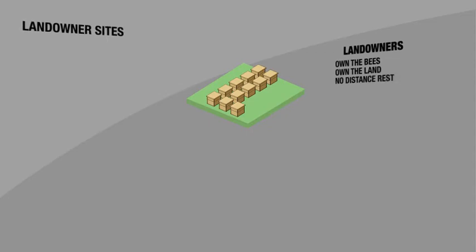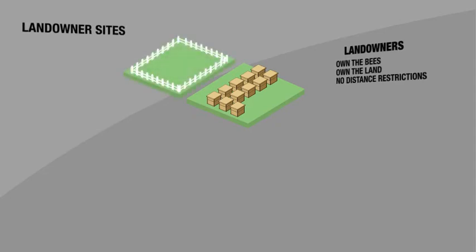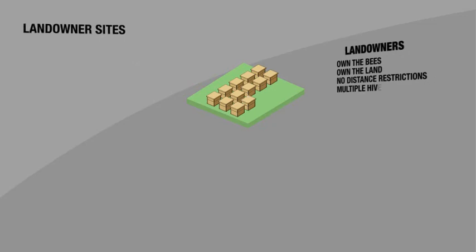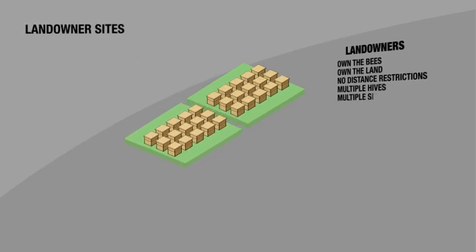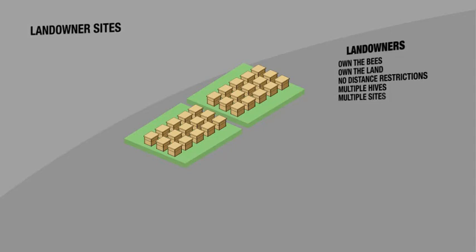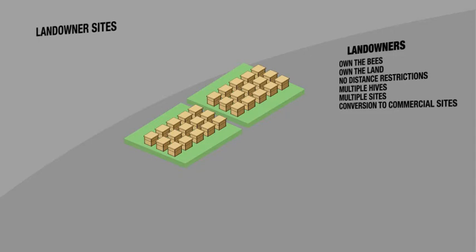There are no distance restrictions on either hobbyists or landowners. If you own the property, you can keep bees on it regardless of whether there's a commercial site or another hobbyist or landowner site nearby. Landowners can have as many hives as they wish on as many sites as they have places to put them. Landowner sites established before the first of July 2009 can be converted to commercial sites without regard to the nearness of other commercial sites.